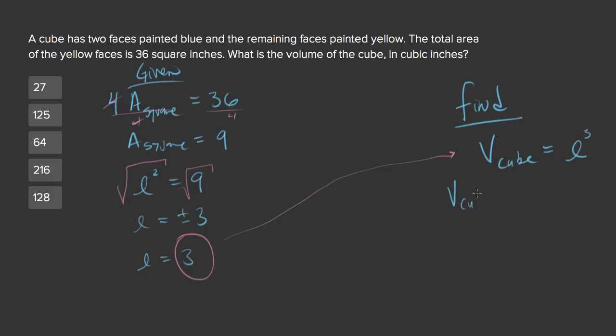So the volume of the cube will equal 3 cubed, which equals 27. And that's your answer.